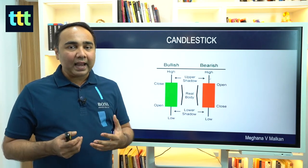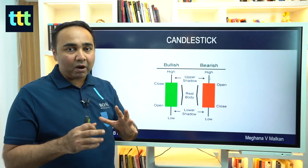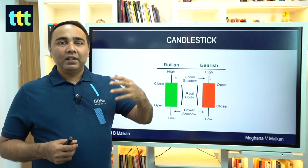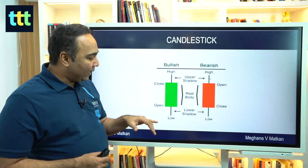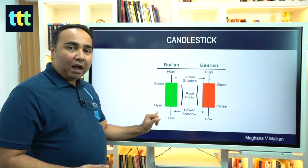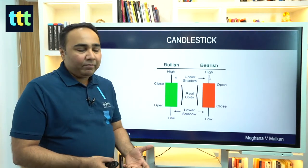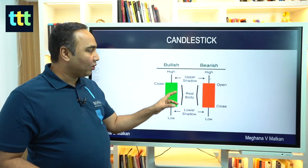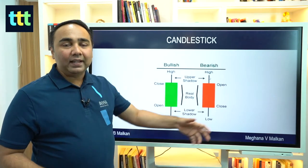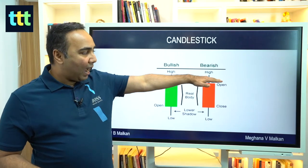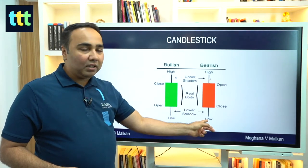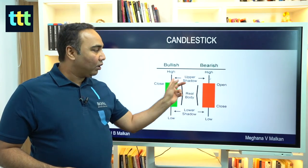What does the green and red candle look like, and what does the thick body and thin body show? There are four prices in the market: open, high, low, close. The thick part — the candle body — represents opening and closing. When closing is above opening, it's a green candle, a bullish candle, and there is a low and a high called the shadow — upper shadow and lower shadow. When closing is below opening, it's a red candle — a bearish candle — meaning the market opened higher but closed lower, with a thick body and the high and low as shadows.